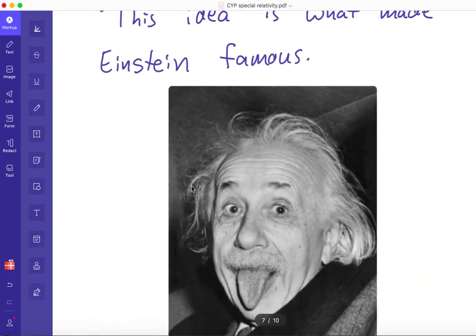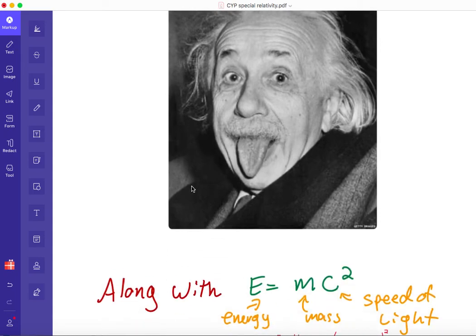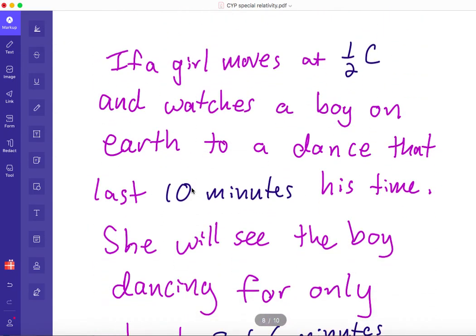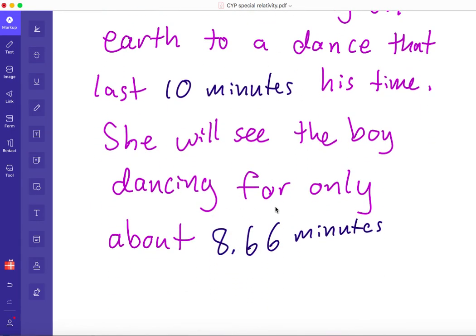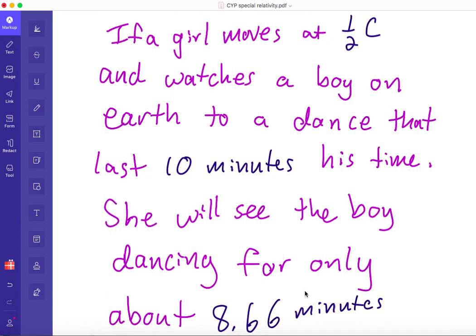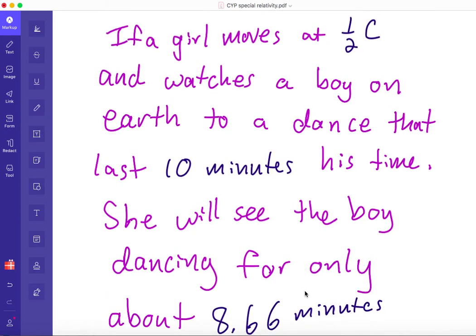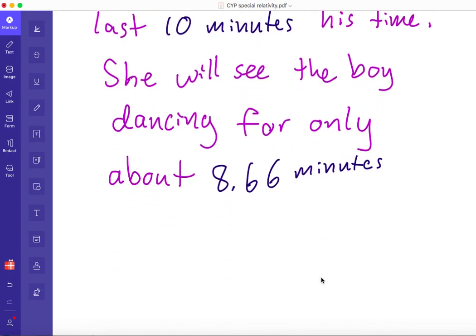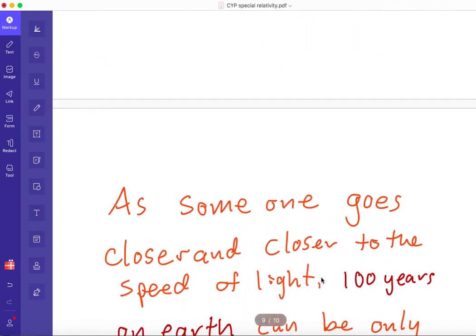It's also possible to calculate this. Einstein not only came up with his idea, but he also came up with a way to calculate it. I'm not going to go through the calculation because it involves some math. But we could say that a girl that moves at half the speed of light, and she watches a boy on Earth do a dance that lasts 10 minutes, she will only see the boy dancing for about eight and a half minutes. By the time this boy gets done doing this 10-minute dance, only about eight and a half minutes pass by on her watch.